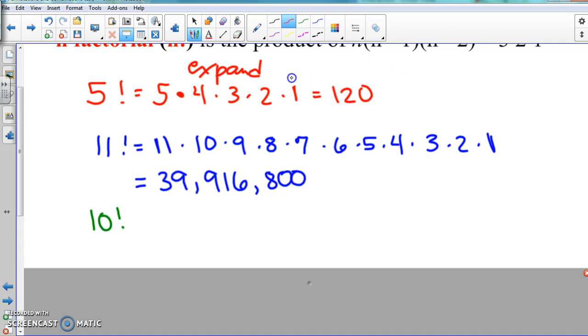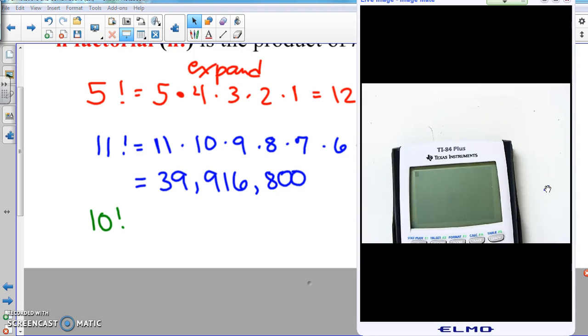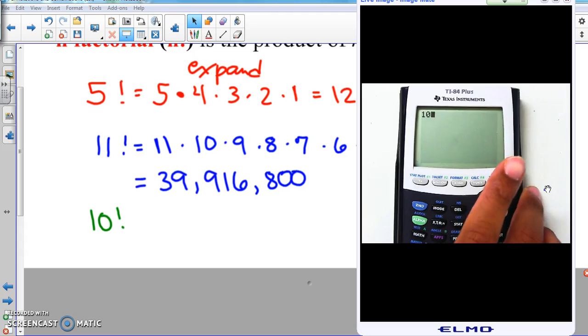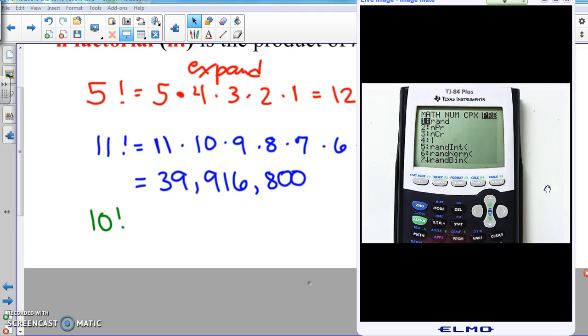All right, so again with this, let's show you in the calculator how to do it. So here we know we have 10, this is called 10 factorial. So we're going to put the number 10 in first off, and then everything that we really need is in math. Summation was in math, pretty much everything is in math. So we're going to hit the math button, so that button right there, math.